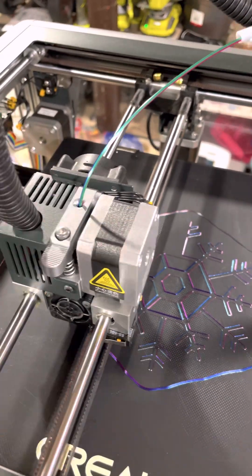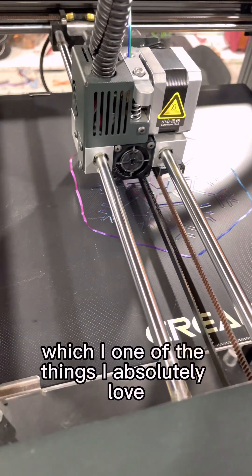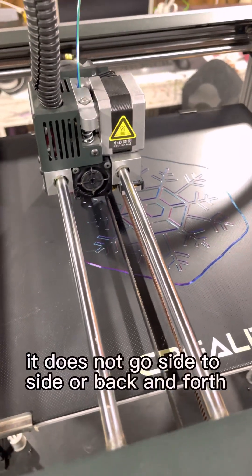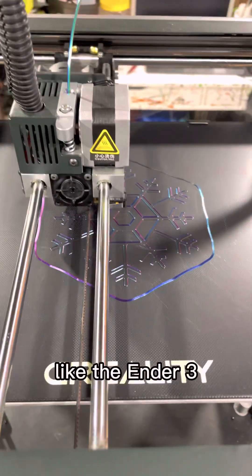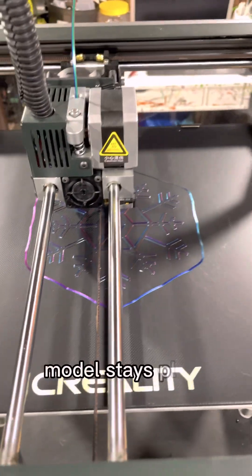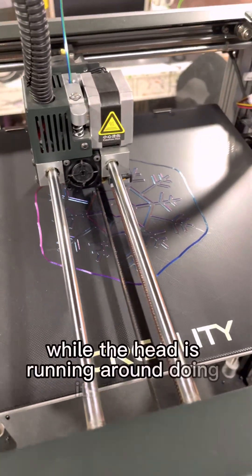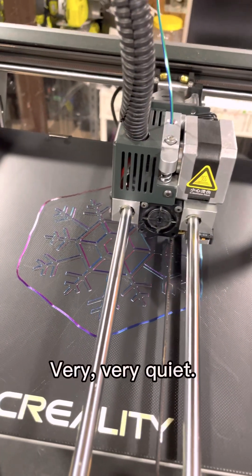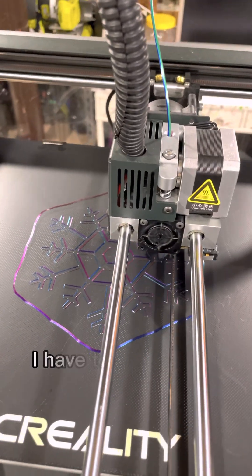One of the things I absolutely love is that the bed goes up and down—it does not go side to side or back and forth like the Ender 3. So the model isn't swinging around; the model stays in place while the head is running around doing its printing. This machine is oddly quiet, very very quiet. Sometimes I can't even tell if it's printing.